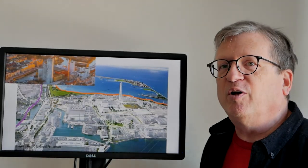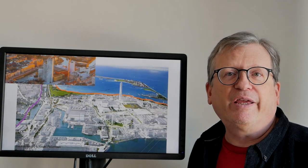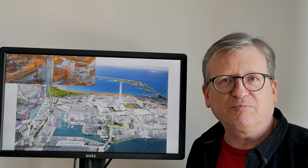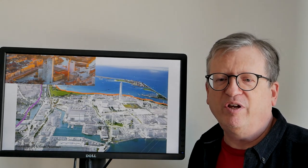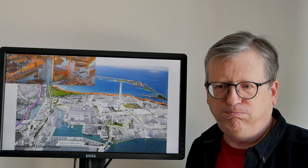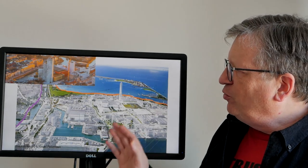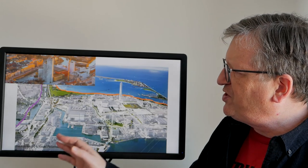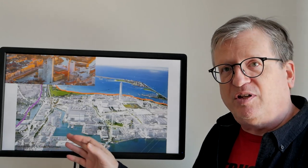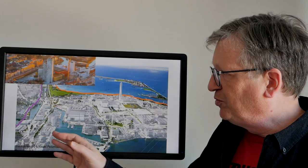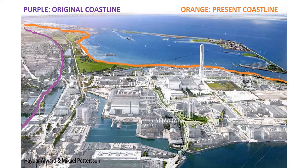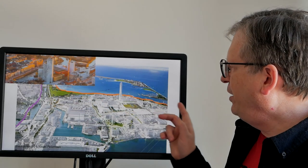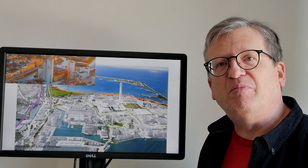In this picture, which is a few years old, the purple line shows the old original coastline. The red line shows the coastline that has been built out — demonstrating how much land has been reclaimed from the sea as part of Malmö's development.